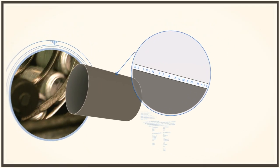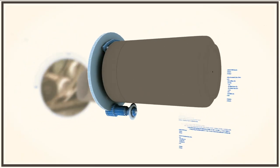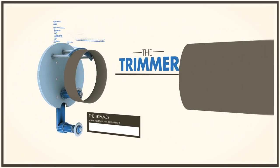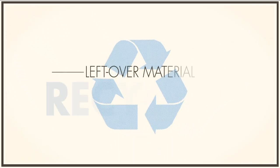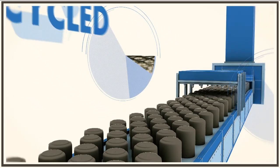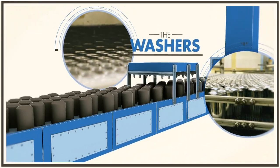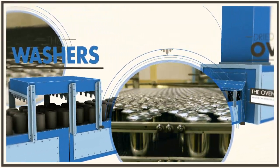The next stage is the trimmer, where the can is cut to the right height. Again, any leftover material is recycled. The cans pass through special washers to remove any traces of lubricants and are then dried in an oven.